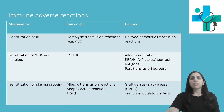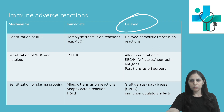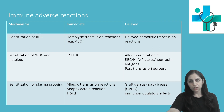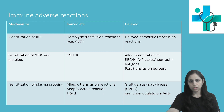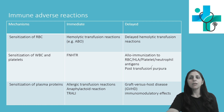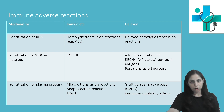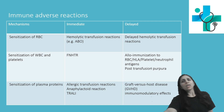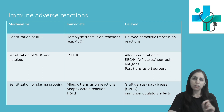Now let us discuss delayed reactions — delayed means which develops after 24 hours, or a few days or months, and rarely after a year. The first important one is delayed hemolytic transfusion reaction, which occurs mainly due to Rh incompatibility, in which there is either formation of IgG antibodies or complement-coated destruction, and it is mainly extravascular hemolysis.